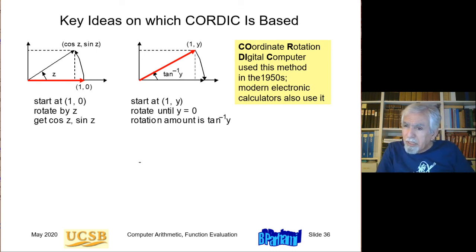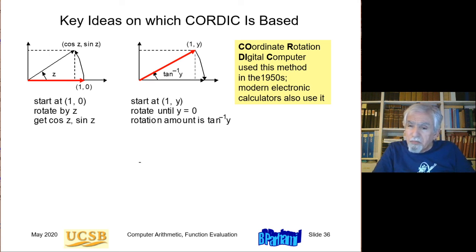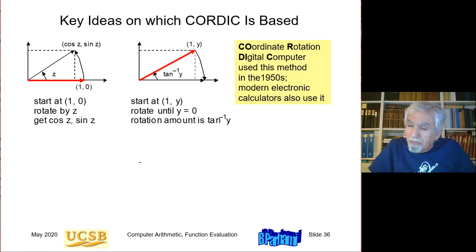CORDIC stands for Coordinate Rotation Digital Computer — a computer from the 1950s that first utilized this method. Today, modern electronic calculators use this method because it's so simple. It requires very little hardware and is very speedy for calculator operation. When you press a key and the answer comes back in a fraction of a second, that's fast enough. The same method may not be good enough for a high-performance processor, but for calculators it definitely has more than enough speed.